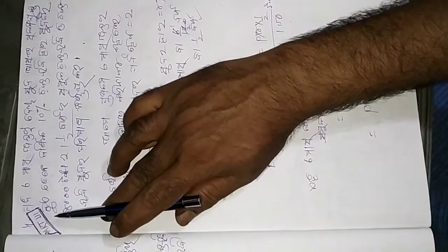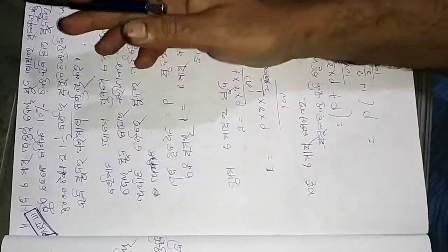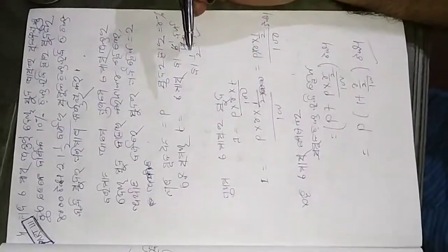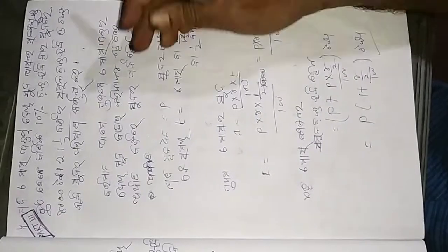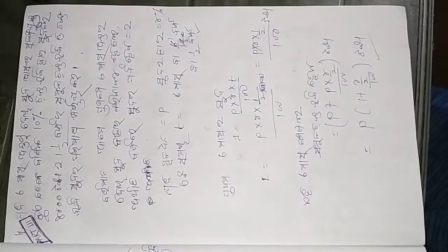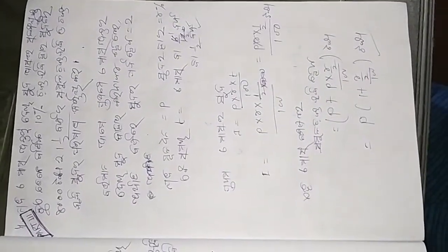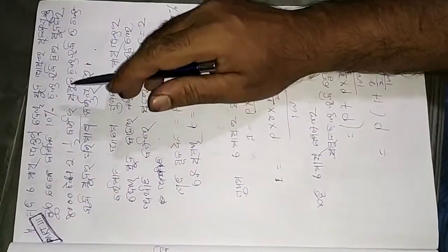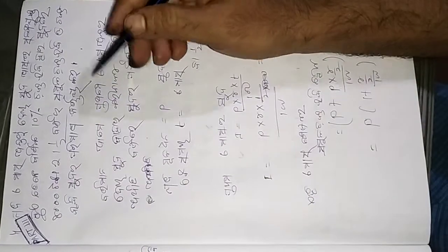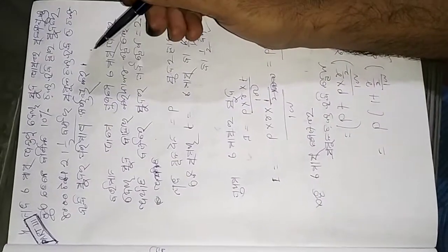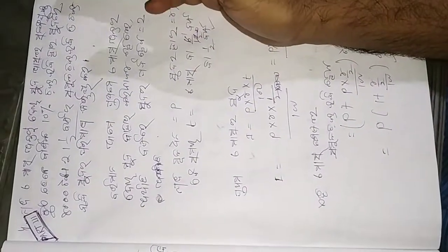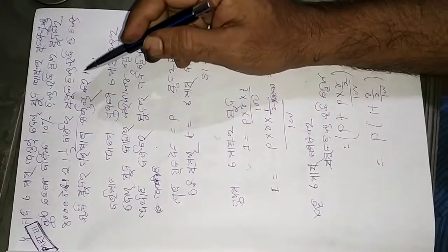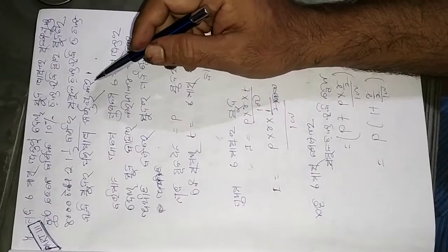I have my own formula as well. The formula, in general, is P into 1 plus r by 100 divided by n. This is my first formula.